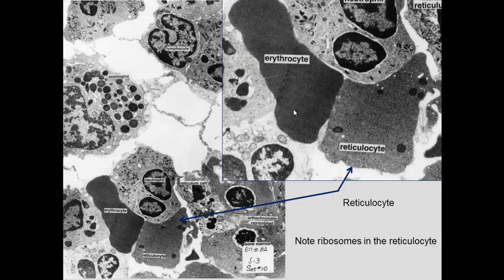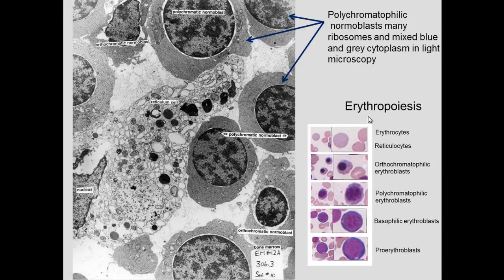At the electron microscopic level, erythrocytes appear very dense due to the high concentration of hemoglobin. Reticulocytes still contain ribosomes and a little mitochondria, giving the blue tint. A polychromatic erythroblast shows blue and gray due to the combination of hemoglobin and ribosomes — this polychromatic appearance comes from more than one color. It is the ribosomes that make reticulocytes appear blue.